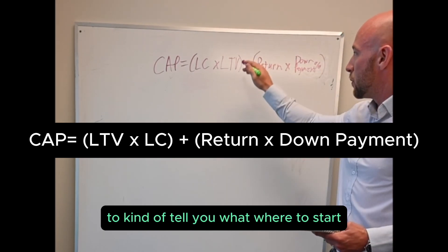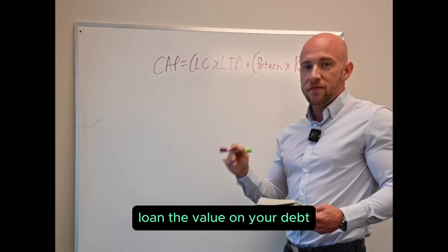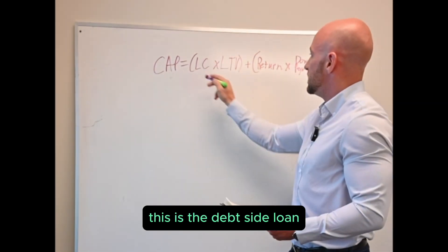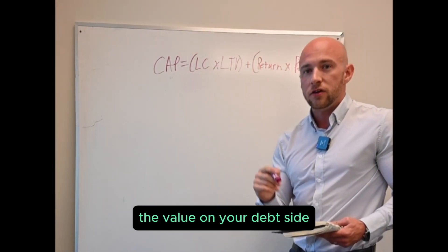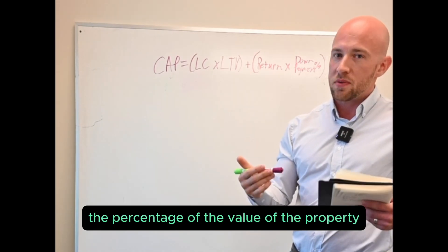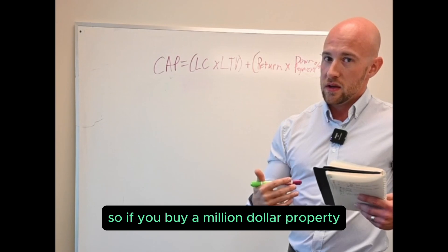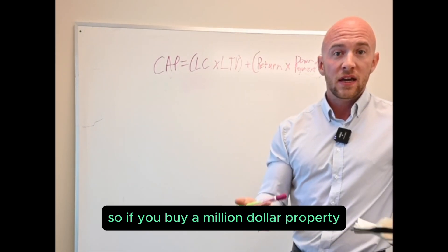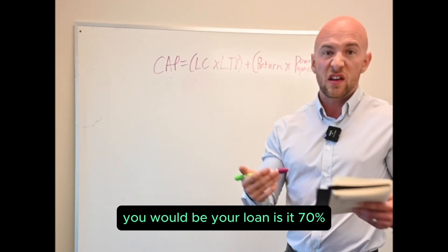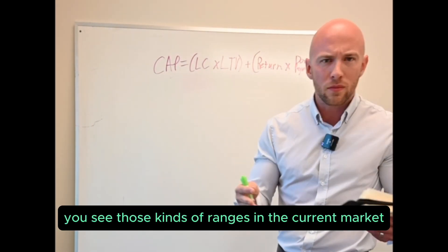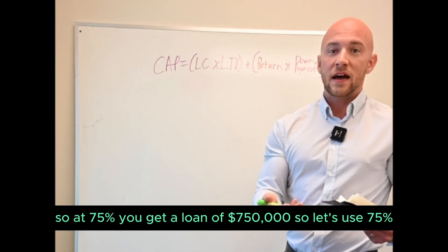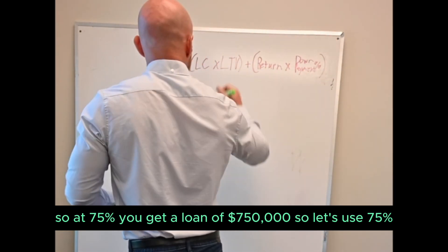Let's start with loan to value. On your debt, we're talking about the debt side, this is the equity side of the equation, this is the debt side. Loan to value on your debt side is basically the percentage of the value of the property you're buying that you can get as a loan. So if you buy a million dollar property, what percentage of that would be your loan? Is it 70 percent, 75 percent, 80 percent? You see those kinds of ranges in the current market. So at 75 percent you'd get a loan of 750 thousand dollars. Let's use 75 percent.